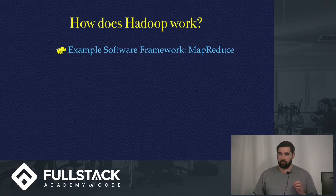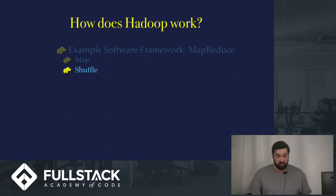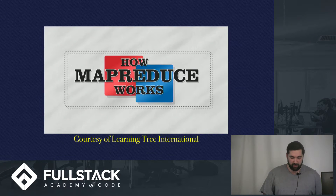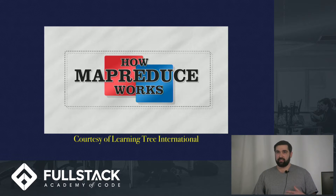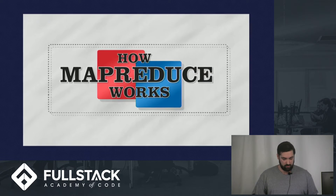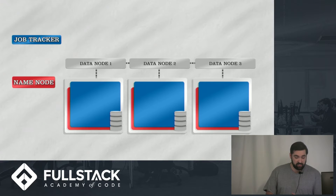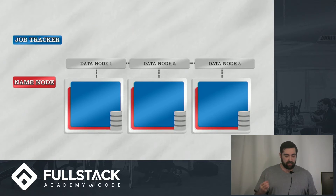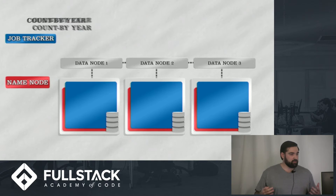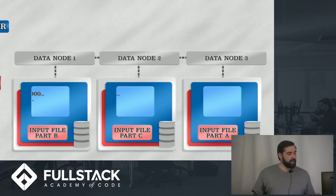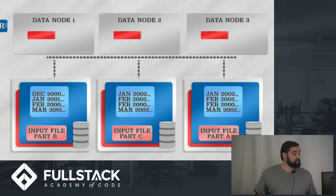An example software framework the job tracker uses is MapReduce. There are three components: the map process, the shuffle process, and the reduce process. Here's an example of data flow during MapReduce — we're doing a simple count of dates occurring across many files. We have input files A, B, and C, each with different years, and we want to count the number of instances of each year across those files.